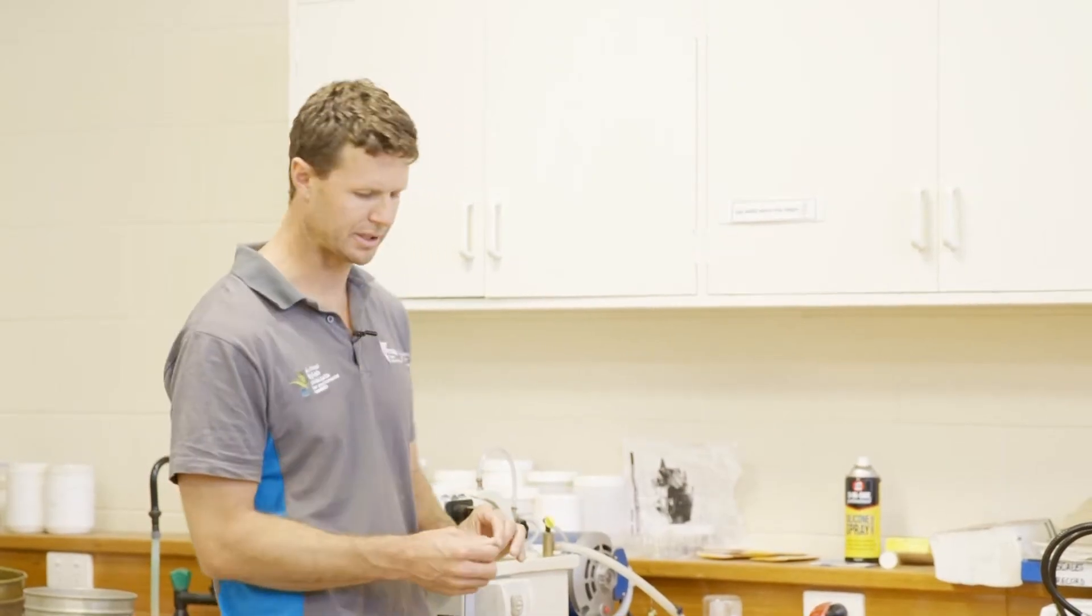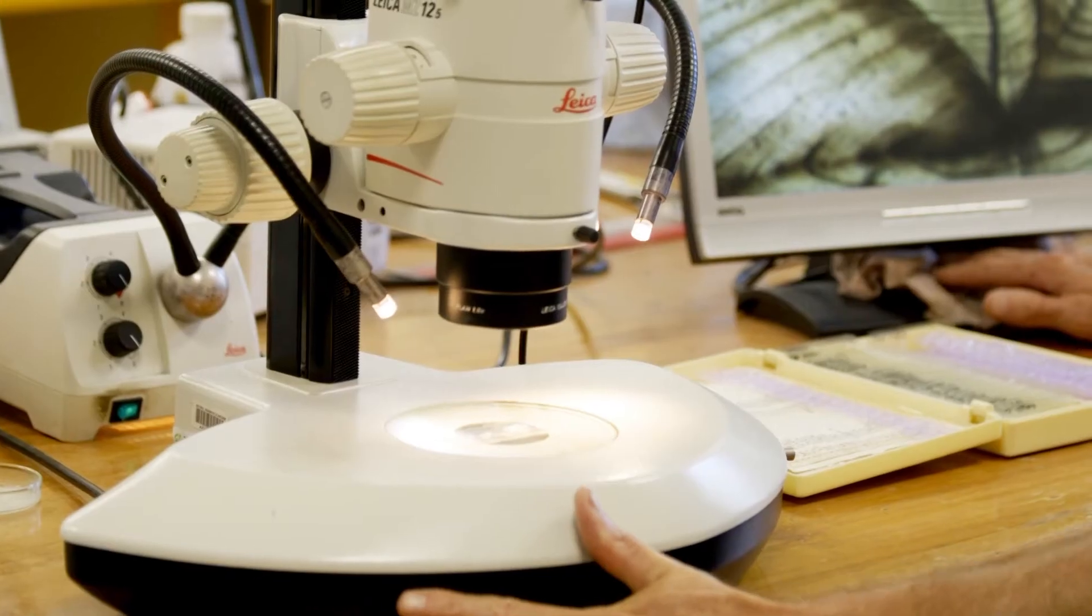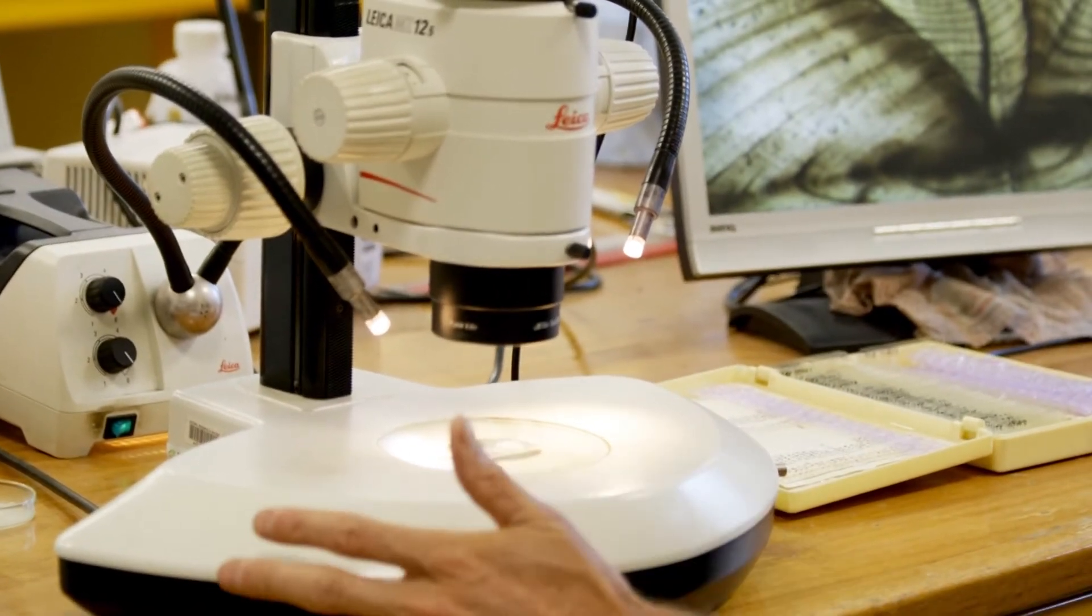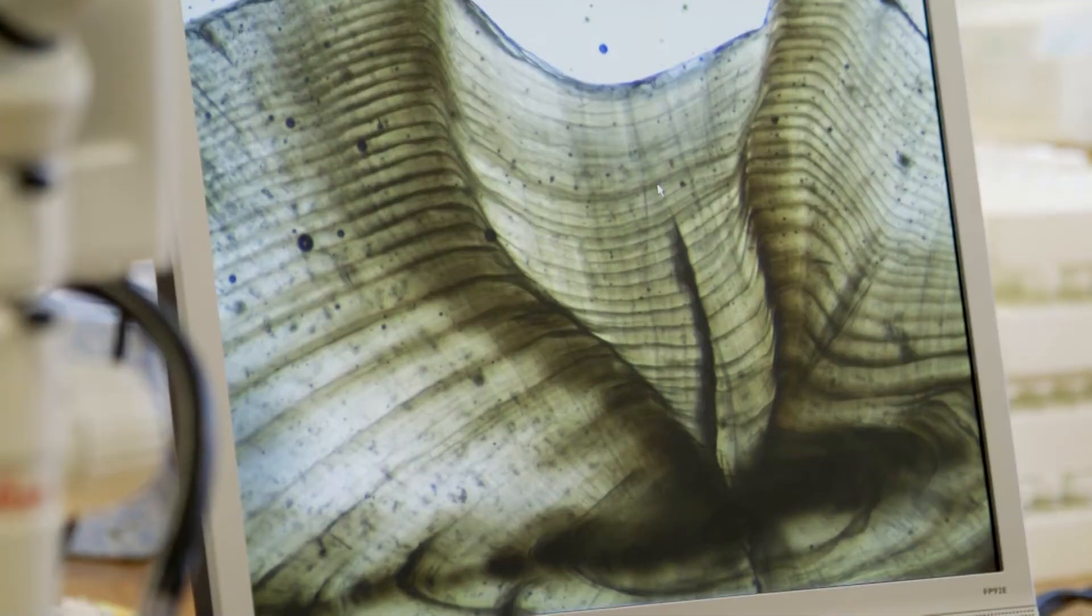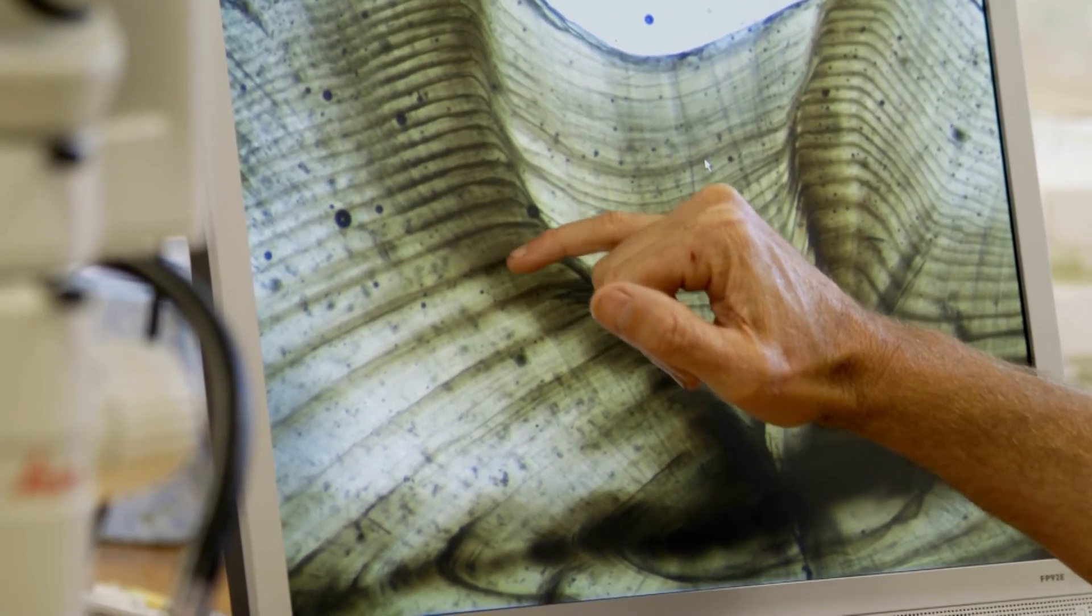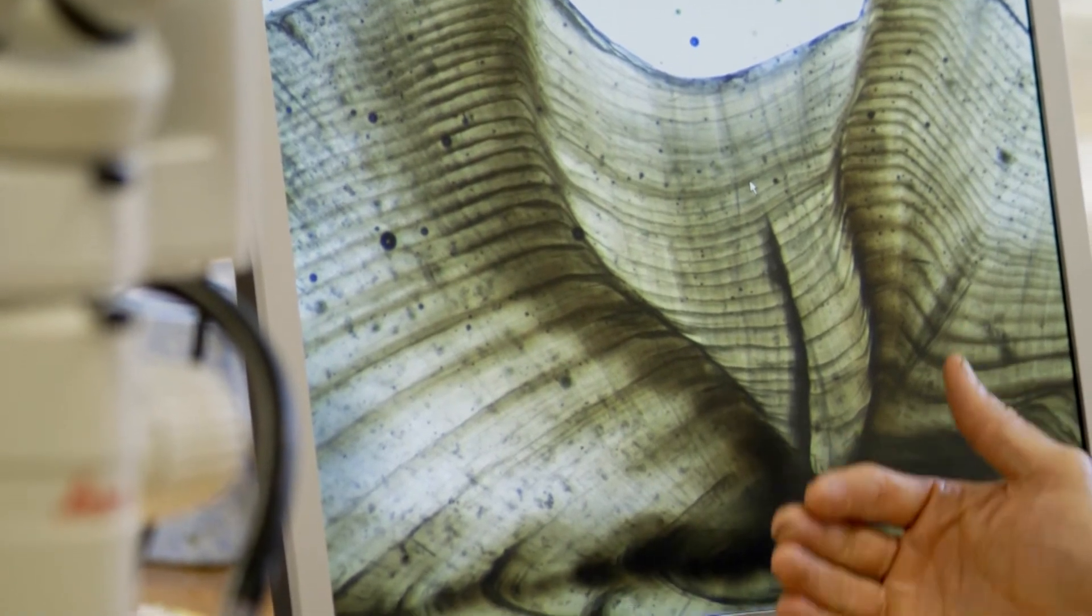Once the sections have been cut we glue them onto a microscope slide and then look at them under a microscope. For a little bone in a fish we can get an amazing amount of information. If I zoom in we can see each of the rings, and this is basically how we age our fish. Count the number of rings and that's how old the fish is.